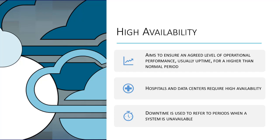Availability itself refers to the ability of end users to actually access the system and to complete their work. If a user can't access the system, from the user's point of view, the system is unavailable. Generally, the term downtime is used to refer to periods when a system is unavailable.